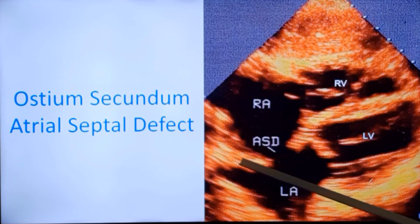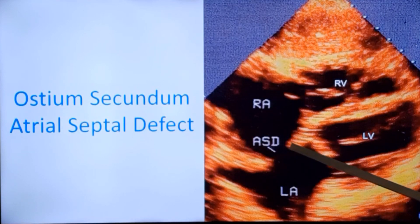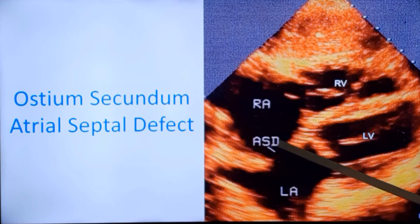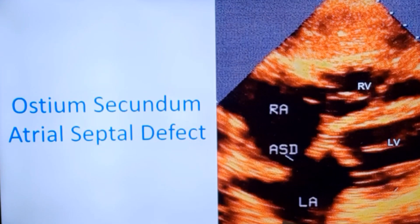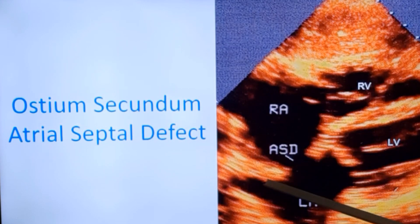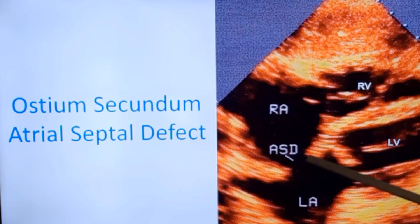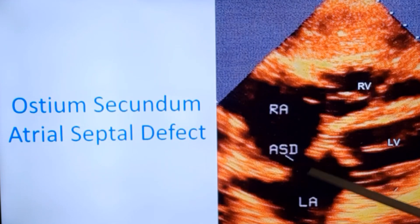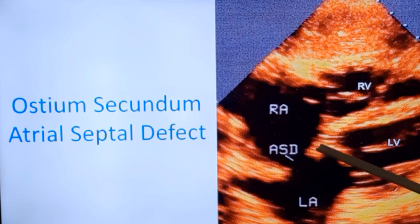There is a good rim above and a good rim below, so it will be suitable for device closure of the atrial septal defect. The device has two flanges, one on the right atrial side and one on the left atrial side. A good rim on all margins is useful to retain the device in situ after deployment; otherwise it can break loose and get embolized into the circulation.